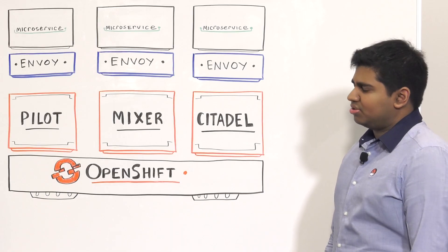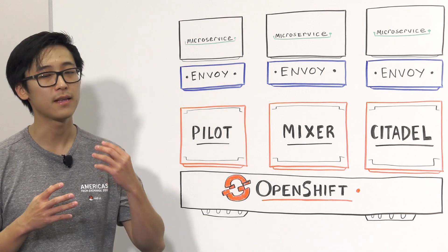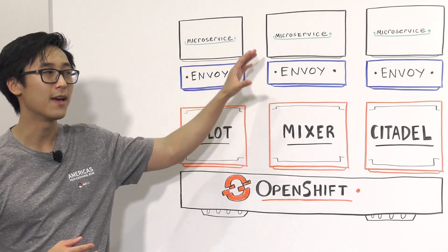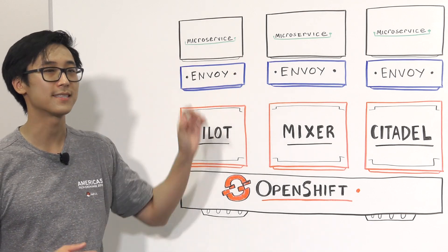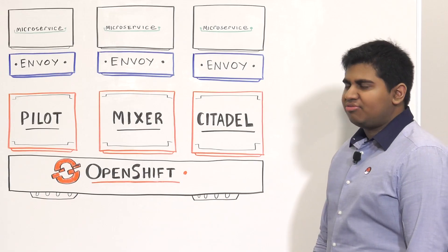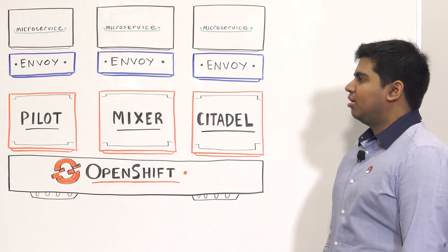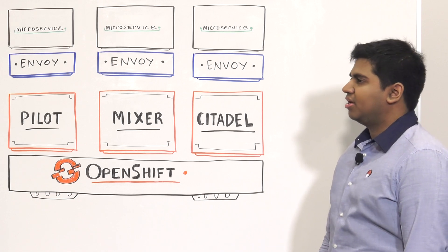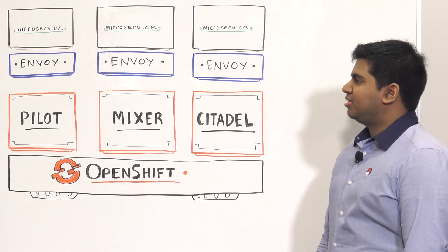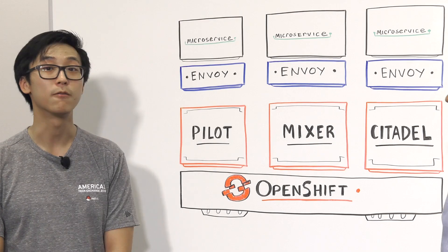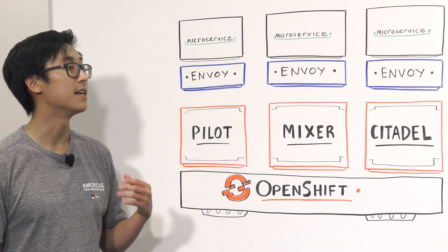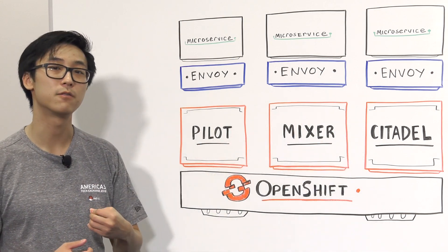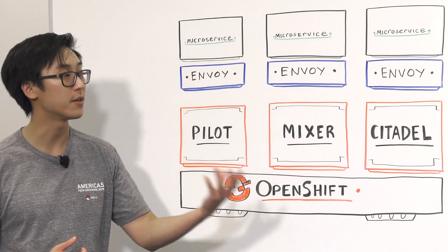So what does Istio consist of? One of the main components of Istio is the Envoy proxy. All microservices deployed within Istio have an Envoy proxy deployed alongside them. Envoy proxy is a high-performant proxy that provides things such as service discovery, TLS termination, circuit breakers, and among other things. But there's actually more to Istio than just the Envoy proxy — there's a whole control plane responsible for routing, monitoring, and security.